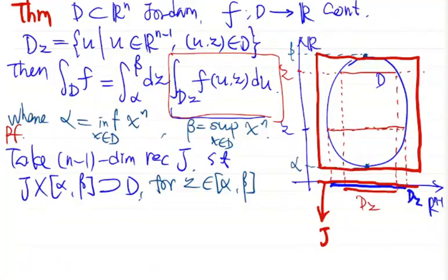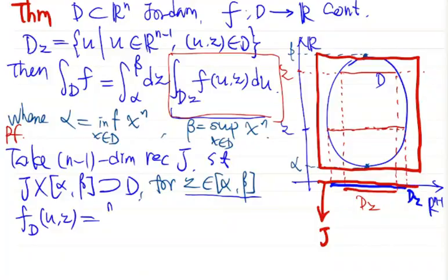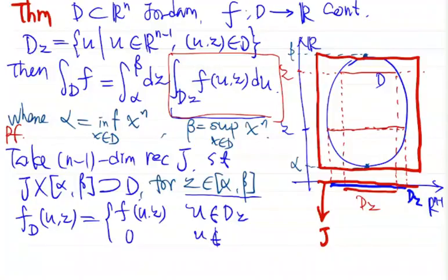We see that for z between alpha and beta, the zero extension f_D evaluated at (u, z) equals f(u, z) if u belongs to Dz, and is zero otherwise.